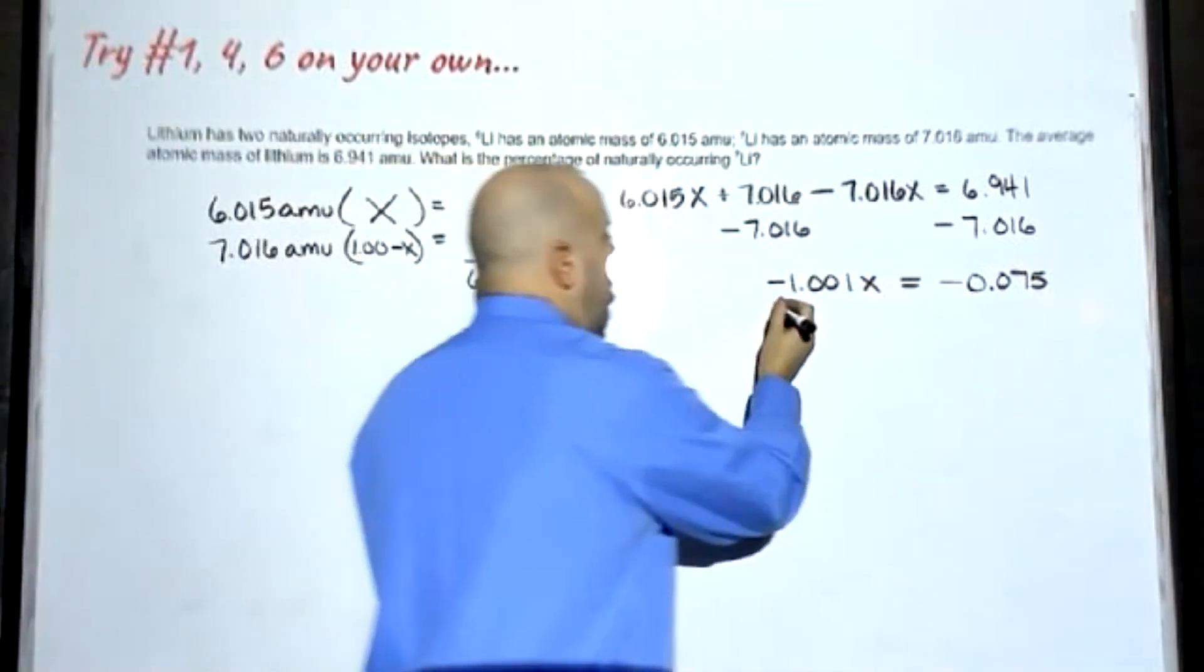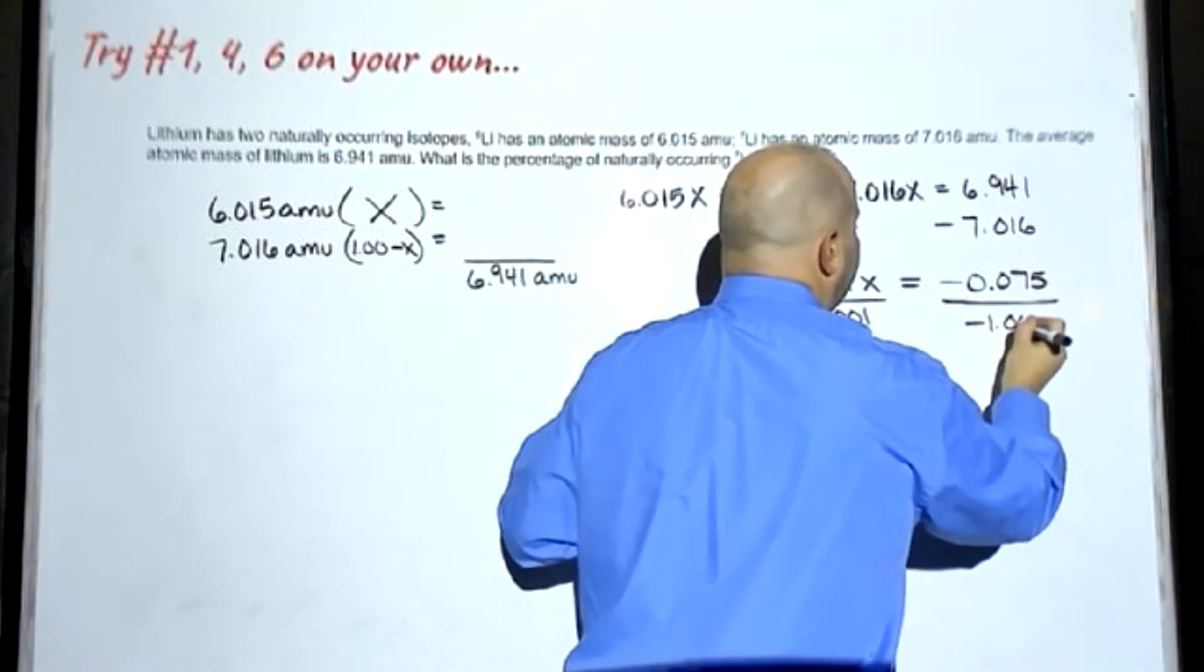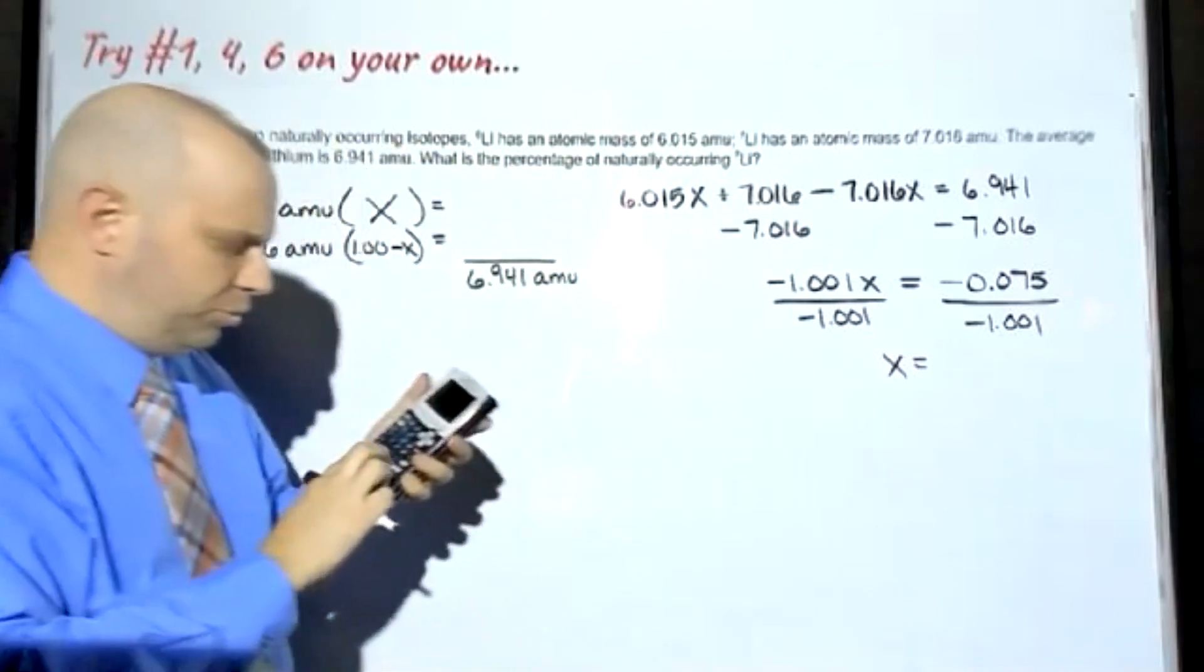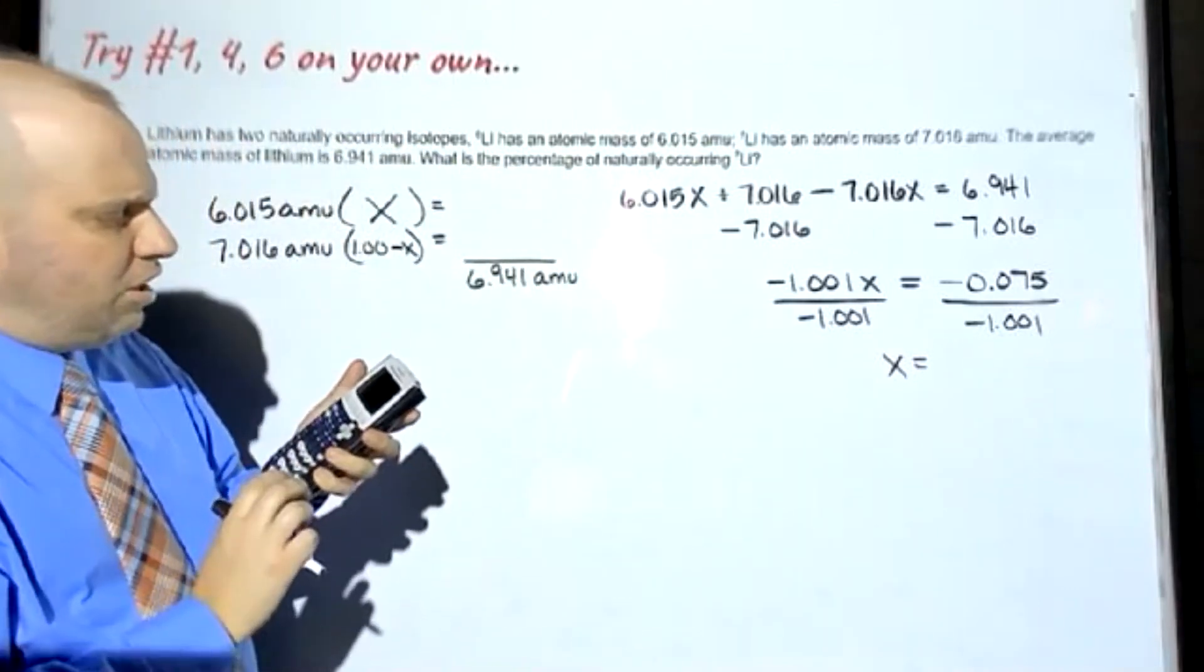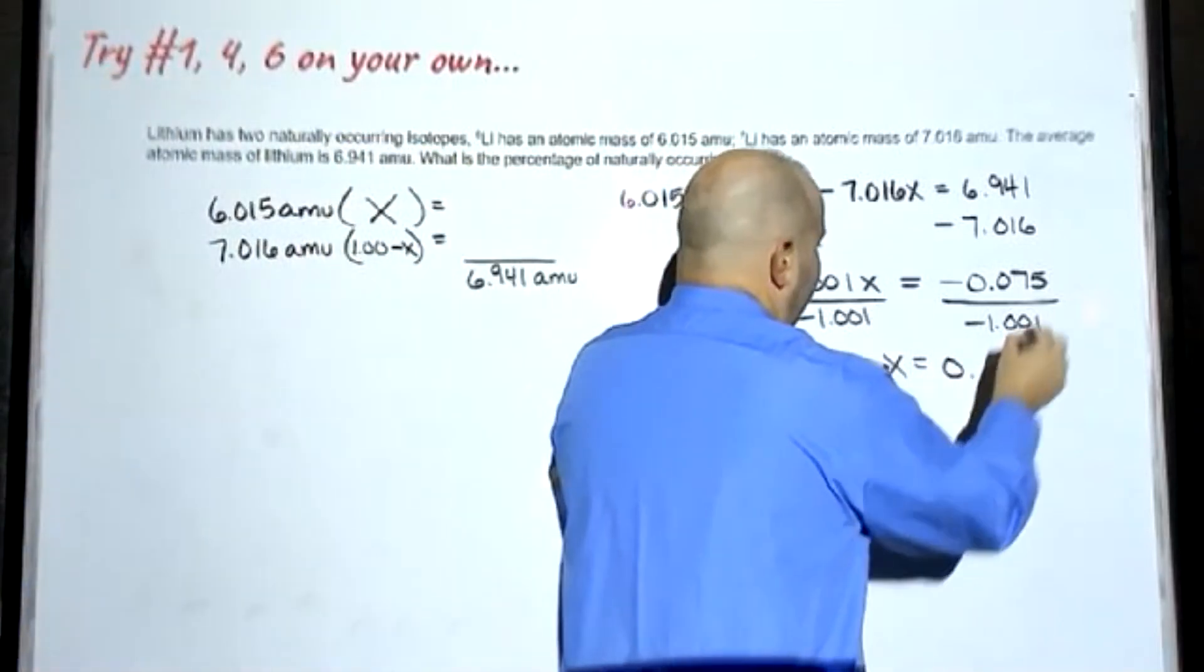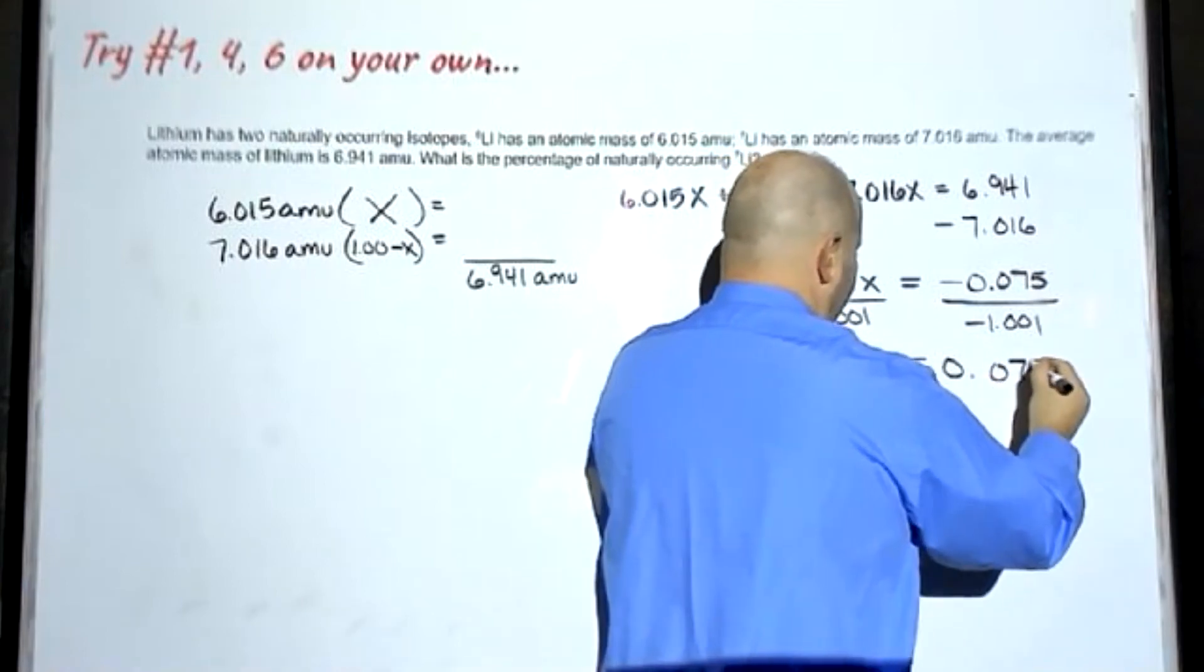Now I can divide by negative 1.001. Divide by negative 1.001. And I get my final answer equal to, accounting for significant figures, 0.75.